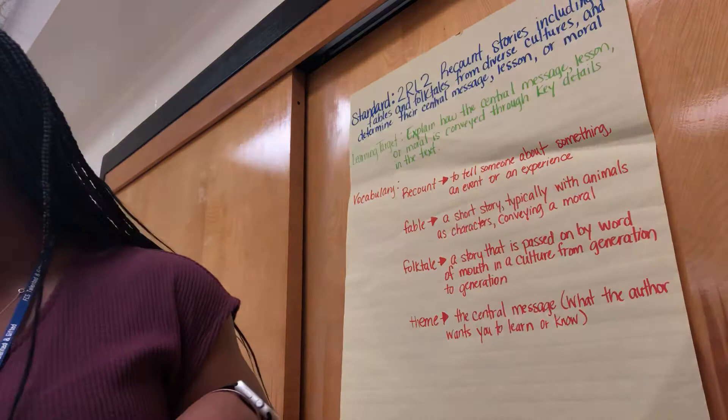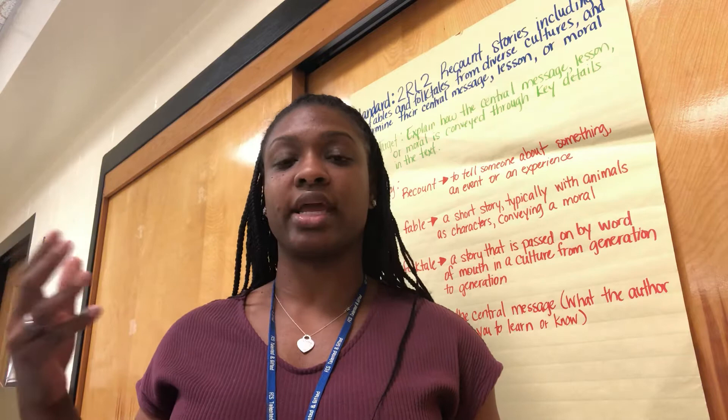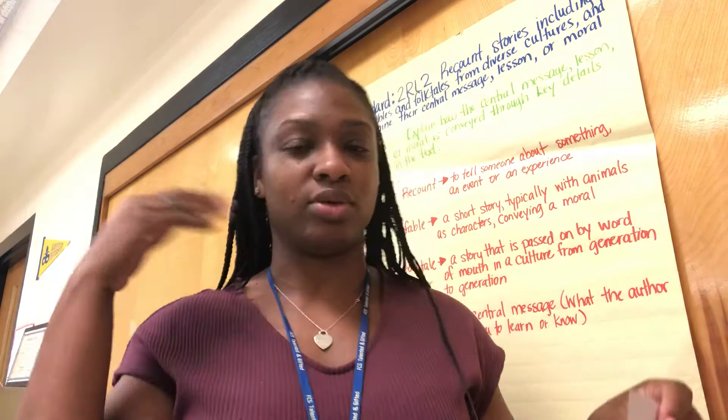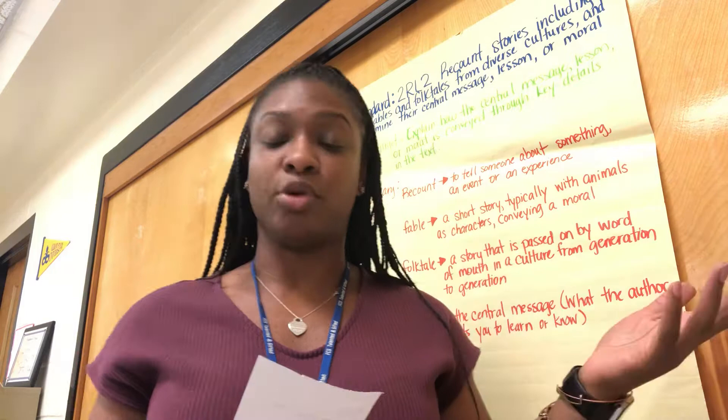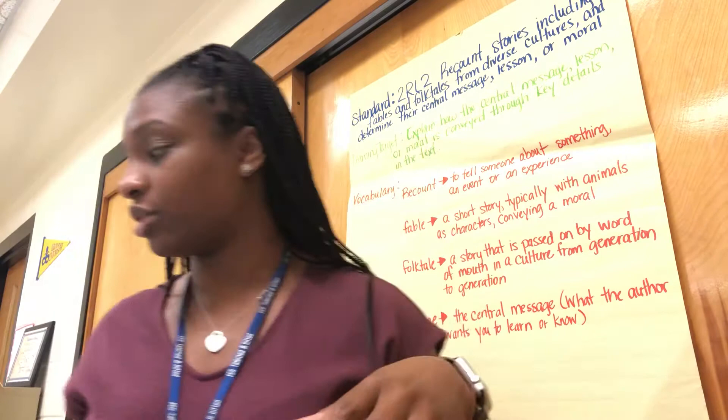Some examples: a fable would be the Tortoise and the Hare. We know that the message or moral of that story is slow and steady wins the race. Although the tortoise was slower than the hare, the tortoise actually won. The hare took off, took naps, and just assumed he would win because the tortoise is supposed to be slow — but the moral was slow and steady wins the race. An example of a folktale would be Goldilocks and the Three Bears — that's a story that has been passed on from generation to generation.